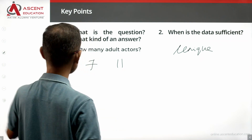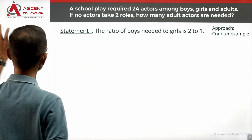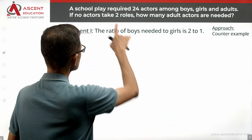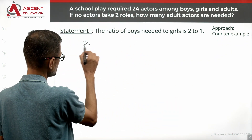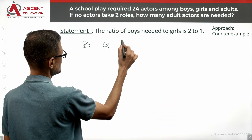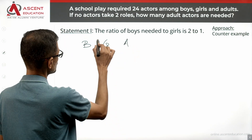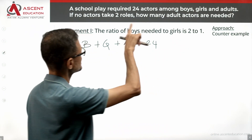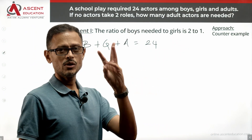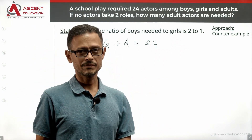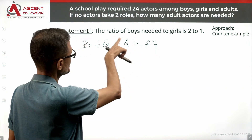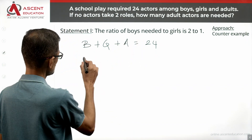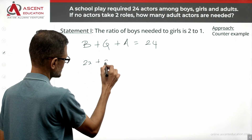Take a look at Statement 1 and see whether it provides adequate information to find a unique value for the number of adult actors. Let the number of boys be B, the number of girls be G, and the number of adults be A. So B plus G plus A is equal to 24. Statement 1 says the ratio of boys to girls is equal to 2 to 1. So if there are 2x boys, there are x girls.